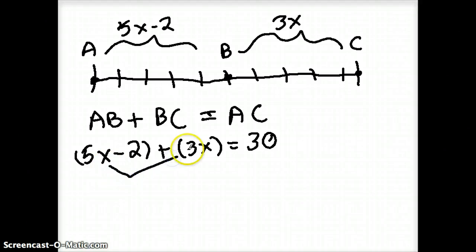Well, we should know how to combine like terms. 5x's and 3x's give me 8x's and I still have that negative 2 in there and it still equals 30.